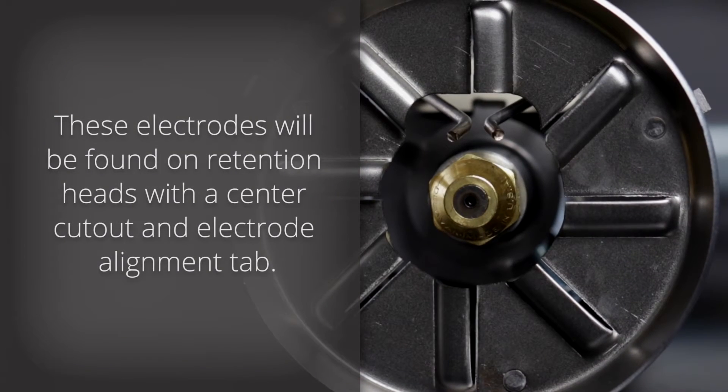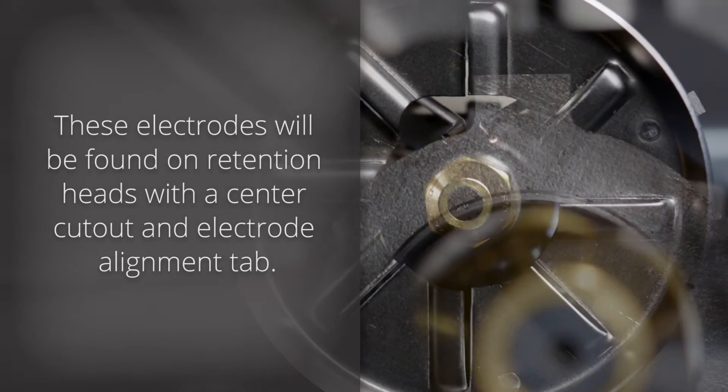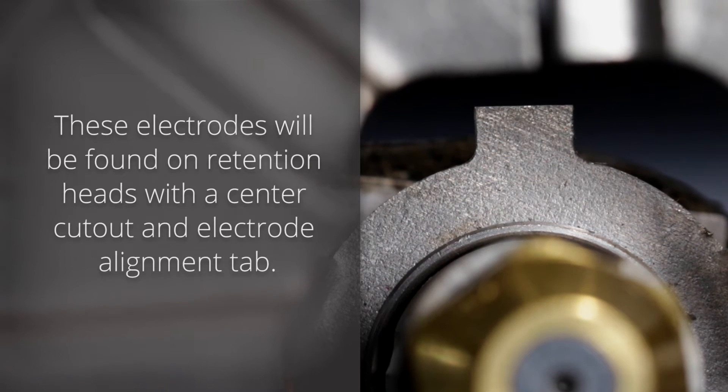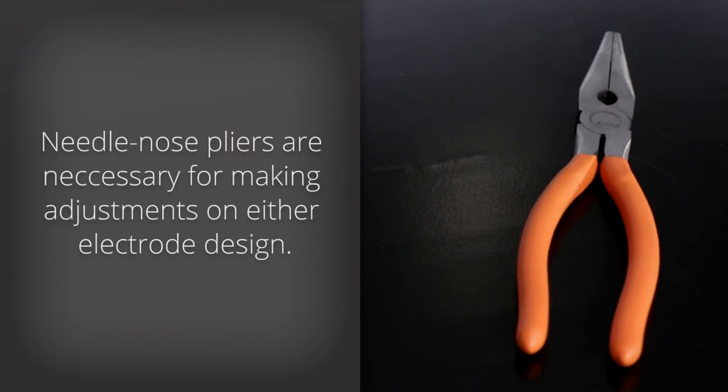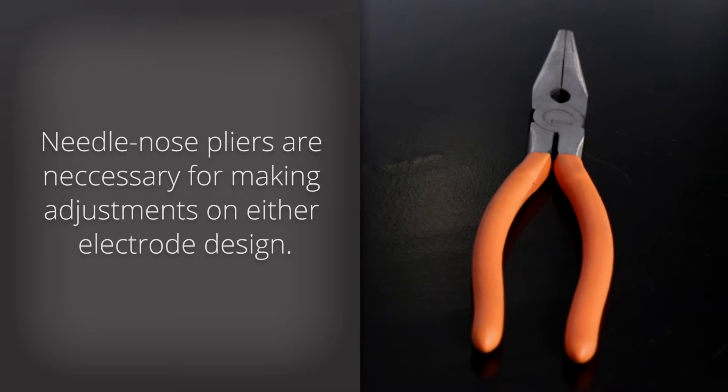These electrodes will only be found on retention heads with a cinder cutout and electrode alignment tab. Needlenose pliers are necessary for making adjustments on either electrode design.